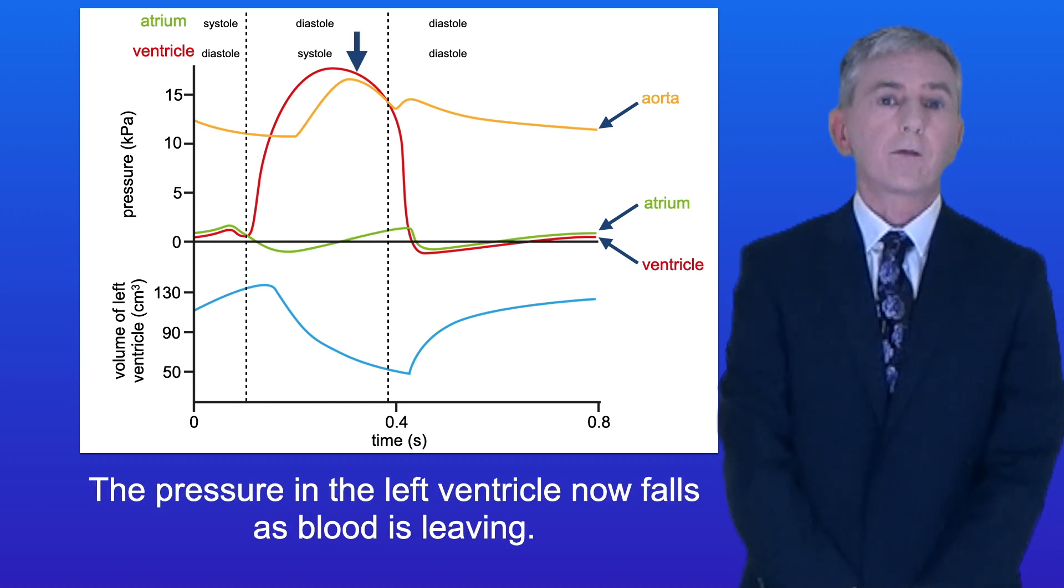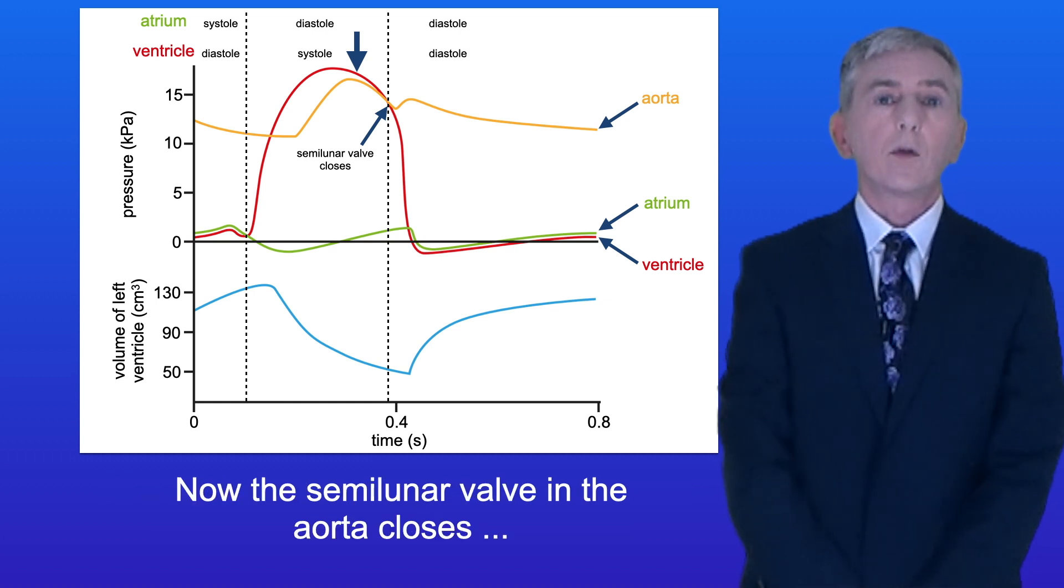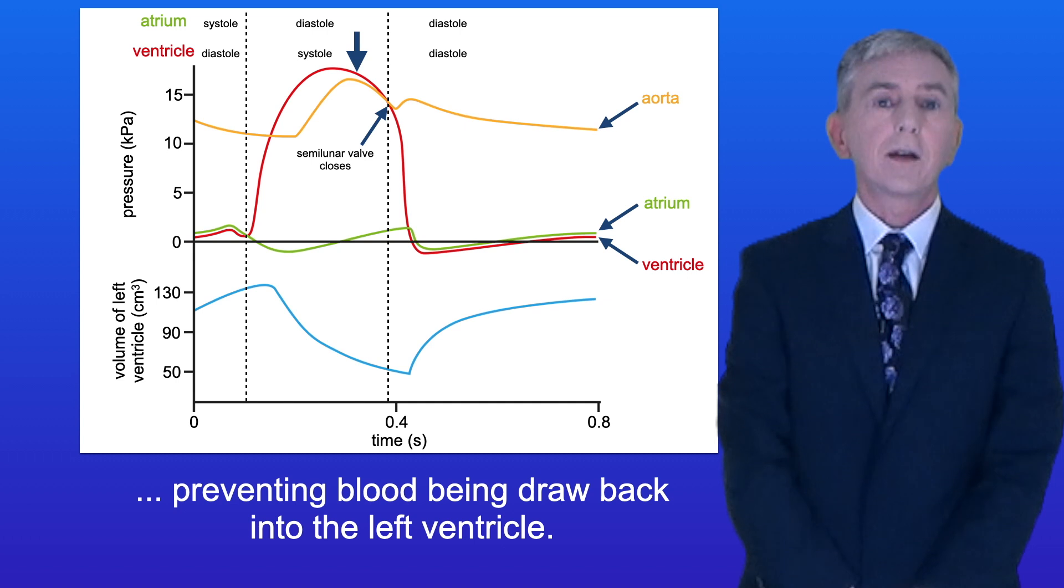The pressure in the left ventricle now falls as blood is leaving. At a certain point, the pressure in the left ventricle is less than in the aorta. Now the semilunar valve in the aorta closes, preventing blood being drawn back into the left ventricle.